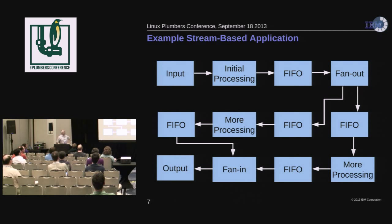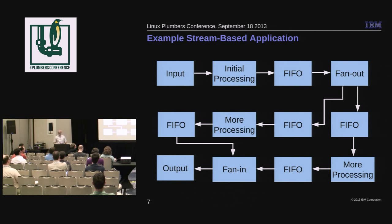Here's an example: we've got some input, do some processing in a thread, put it in a FIFO, have another thread do fan-out which duplicates the data into two FIFOs, which are then processed. We have a fan-in stage and then the output. That allows us to be primarily doing single-threaded work but get parallel throughput.